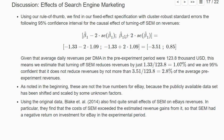Using our rule of thumb, we find for our fixed effect specification with cluster robust standard errors the following 95% confidence interval for the causal effect of turning off search engine marketing on average GMA daily revenues. It's the estimated coefficient plus or minus two times the standard error, and this confidence interval is from minus 3.51 to 0.85.